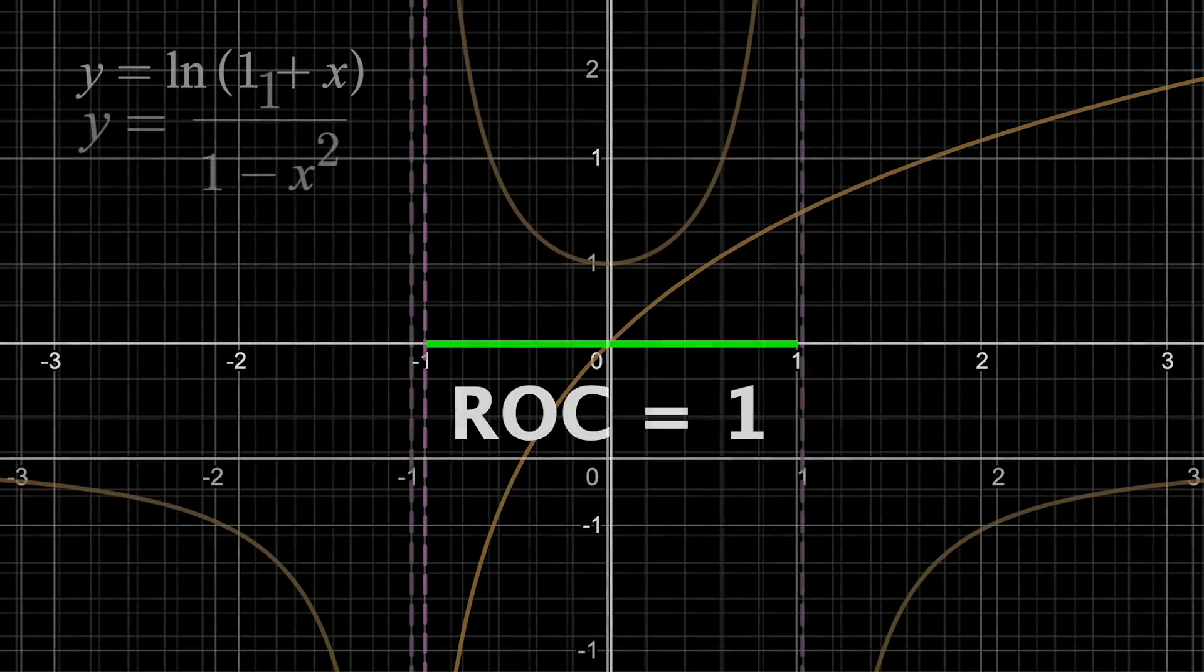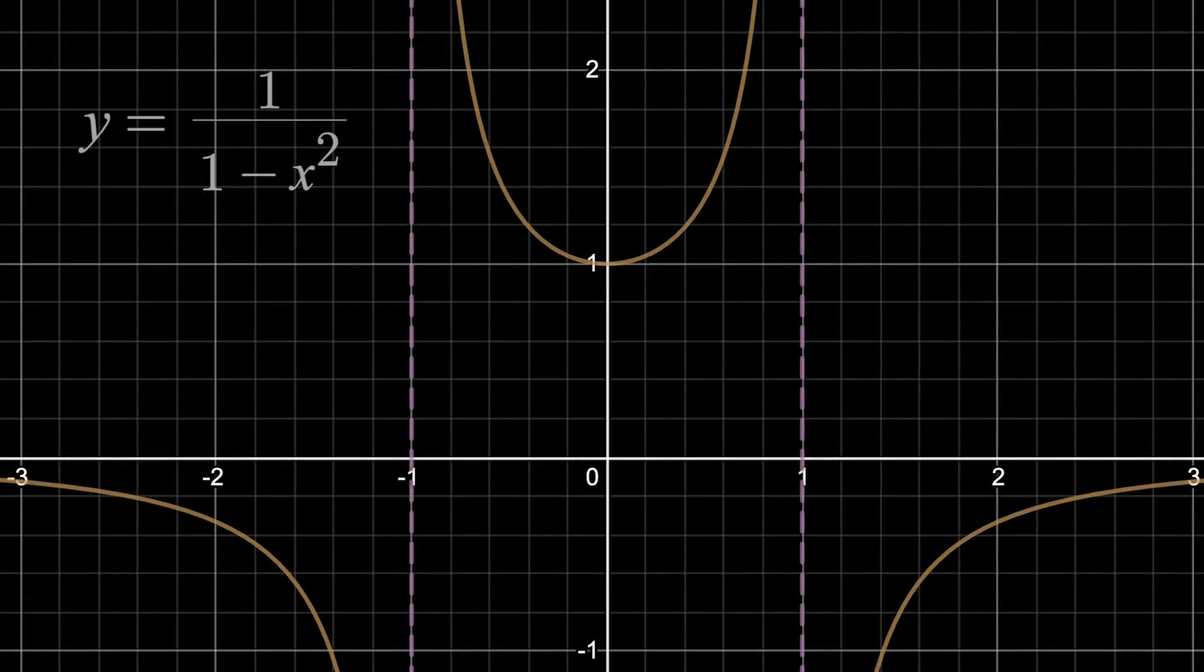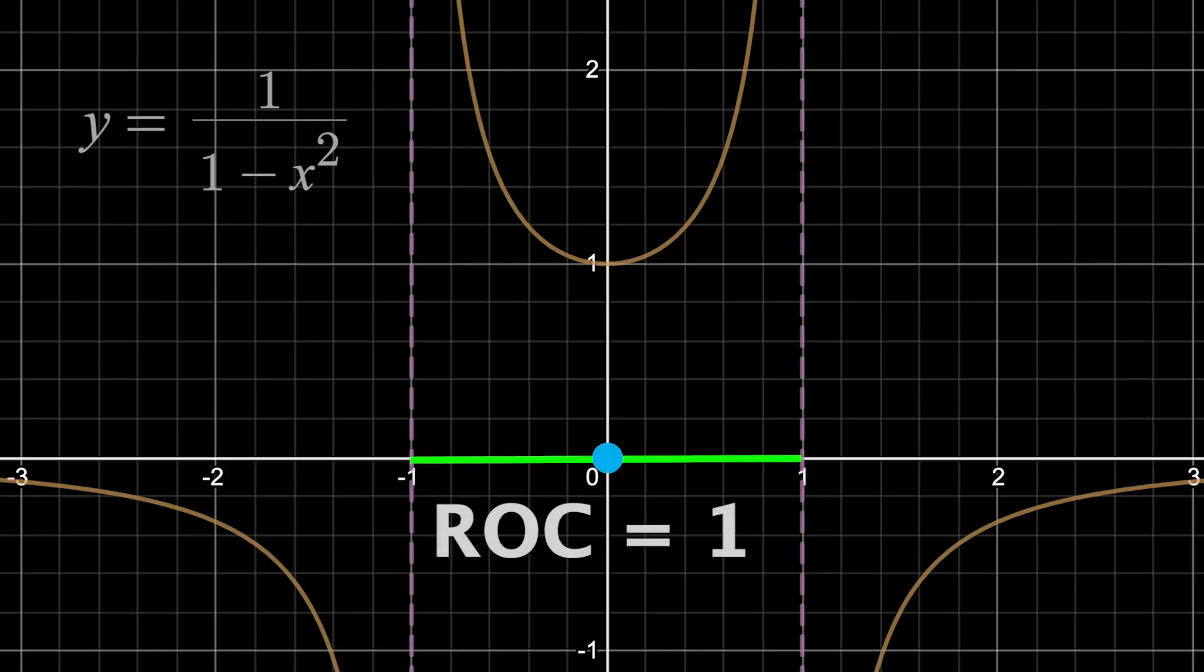For 1 over 1 minus x squared, same idea. When our series was centered at x equals 0, the radius of convergence was 1, which is the distance to each vertical asymptote. When we moved that center to x equals 0.3, the new radius of convergence was 0.7, which is the distance to the closest vertical asymptote.